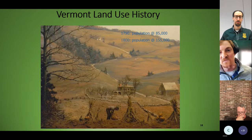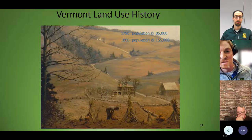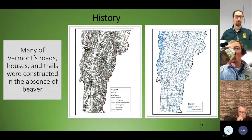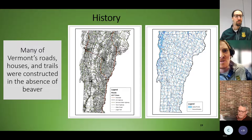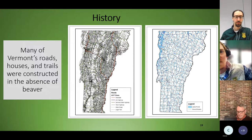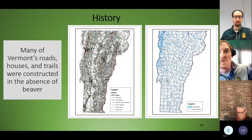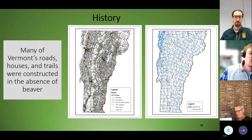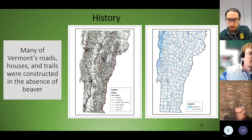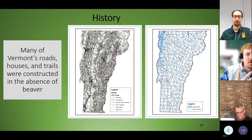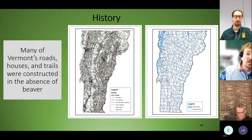Beaver, on the other hand, had been gone from the landscape for almost 100 years before people settled here. As a result, many of Vermont's roads and infrastructure were built on the landscape in the absence of beaver. Vermont now has over 15,000 road miles of state and town roads, plus an untold number of private driveways and infrastructure. When you overlay all that infrastructure with the number of streams, ponds, and wetlands we have, the opportunities for conflict with beaver are really high.